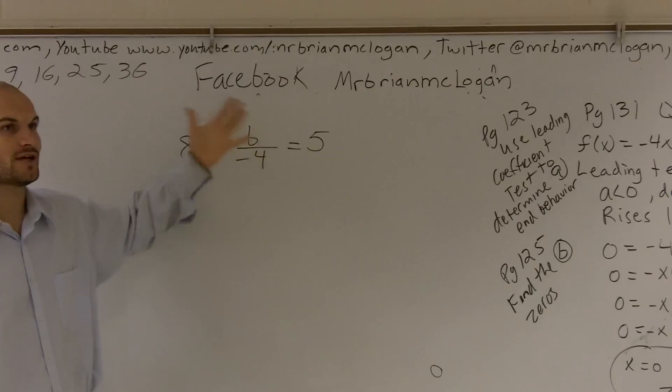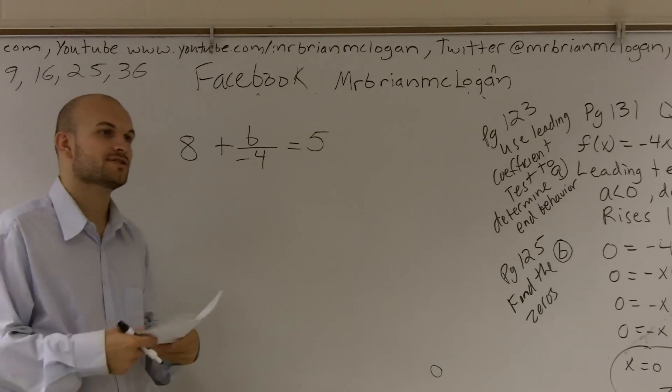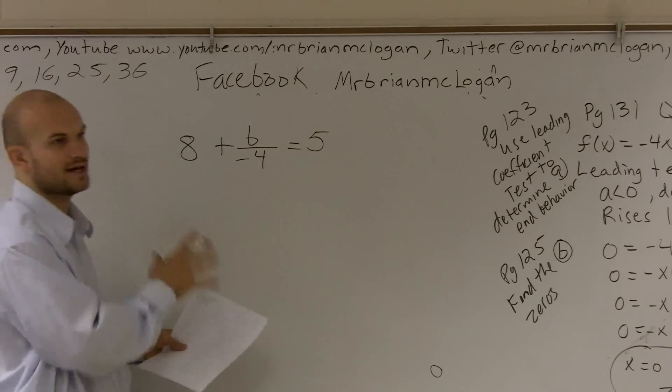On this variable b, we've got to look at what's happening to our variable. Well, it's being divided by negative 4, and it's also being added by positive 8. So we're solving for our equation. The first thing we want to do is always look to simplify, where here we can't.